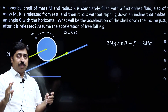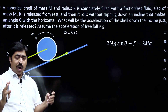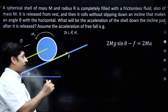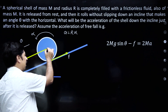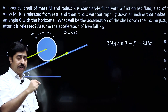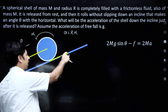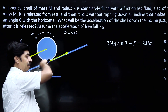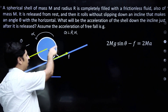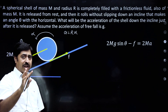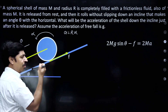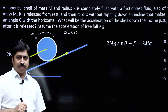Which force produces torque on this white colored shell about its center? Friction produces a torque which is counter-clockwise in this diagram. The weight force component along the incline will have no torque about the center, of course.